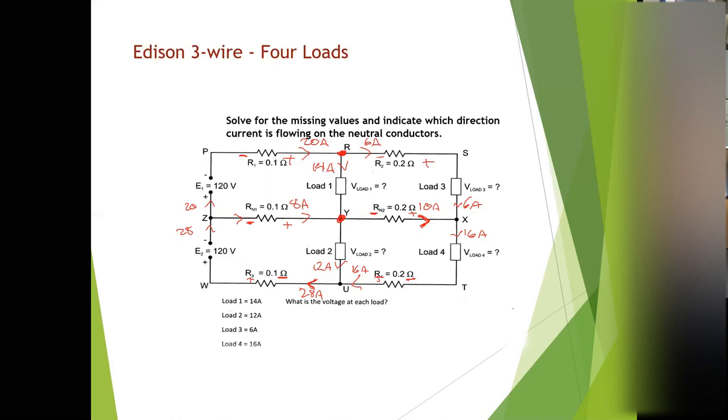So the volt drop across R1 is going to be equal to the current of R1 multiplied by R1. 20 amps times 0.1 ohms gives us 2 volts. So what I'm going to ask you to do is take the next minute and find all the volt drops across the resistors. And then report back to me what all those volt drops are.